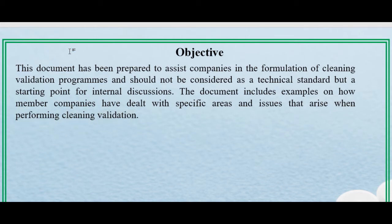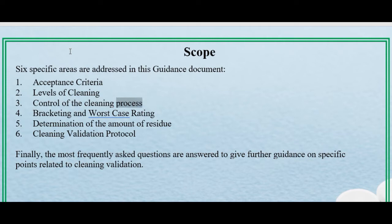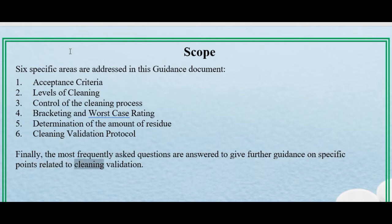Scope: Six specific areas are addressed in this guidance document — acceptance criteria, levels of cleaning, control of the cleaning process, bracketing and worst-case rating, determination of the amount of residue, cleaning validation protocol. Finally, the most frequently asked questions are answered to give further guidance on specific points related to cleaning validation.